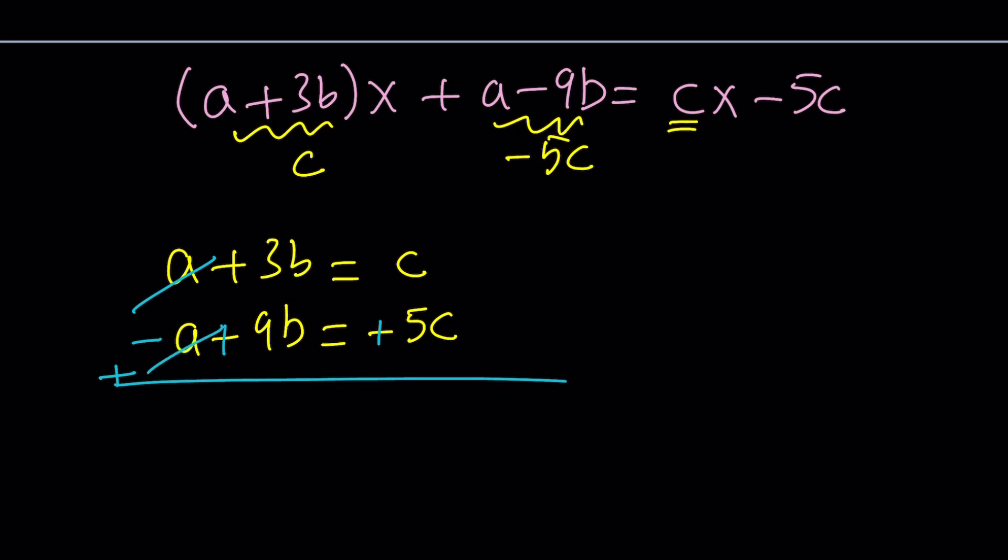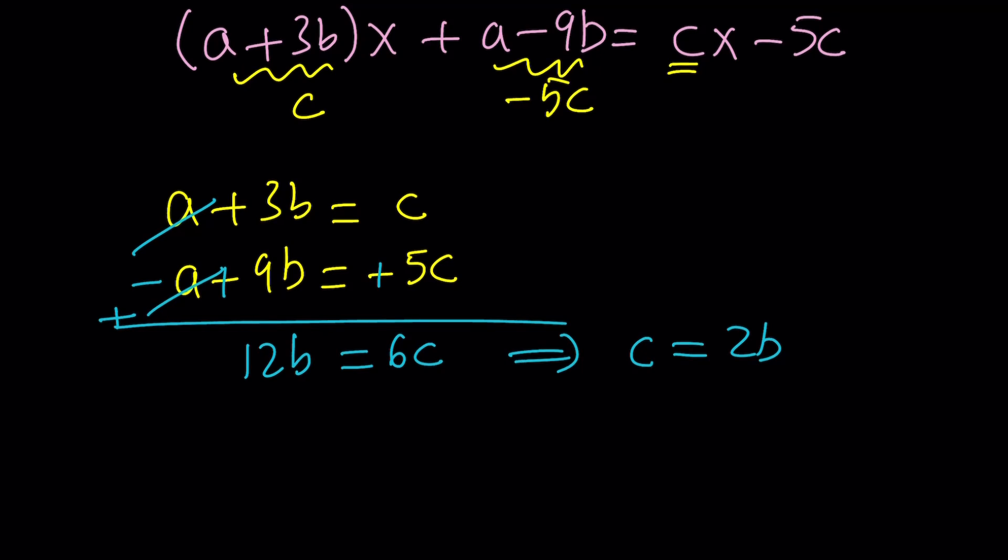A cancels out, which is nice because that's something you can do. And from here, we get 12b equals 6c. Simplify it and you're going to get c equals 2b. This wasn't intentional. It just came out to be. Now, c equals 2b, but I also need a in terms of b, maybe, right? How do I get that? Well, I'll use the first equation. a+3b is equal to c, which is the same as 2b. From here, we can basically subtract 3b and write a as -b. Awesome.